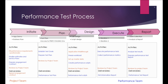The performance test process is divided into many phases: initiation phase, planning phase, designing phase, execution phase, and reporting phase. As you can see on the screen, the activities and deliverables highlighted in orange color in each phase are to be taken care of by the project team. The activities and deliverables in blue are the responsibilities of the performance testing team. I suggest pausing the video for a minute or two to understand each team's deliverables and roles.